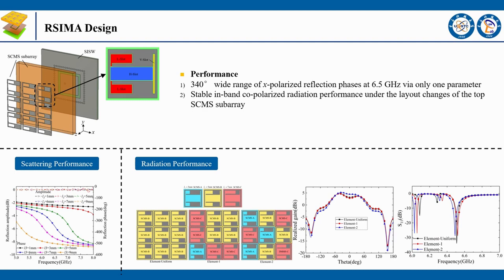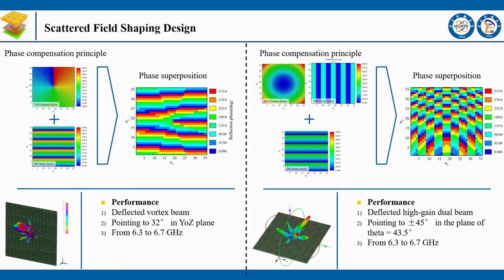With these radiation and scattering potentials, the ARCEMA array of 12×12 elements is expected to achieve two in-band co-polarized scattered field shaping cases: a deflected vortex beam and a deflected high-gain multi-beam. By the phase compensation principle and phase superposition method, the SCMS can construct the required phase distribution to accurately realize complex scattered field shaping.